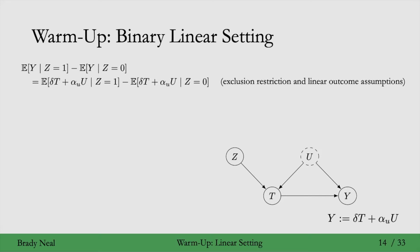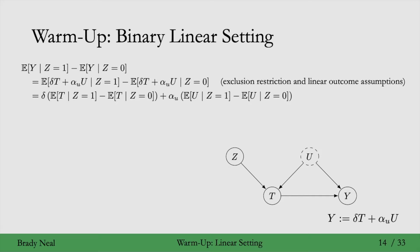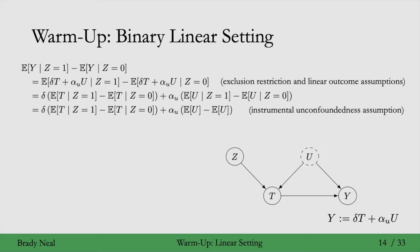So that's what we get here. To do this, we're using the linear outcome assumption, and in addition we're using the exclusion restriction assumption, since that tells us that z doesn't show up in this structural equation for y. Then we can just use linearity of expectation and regroup terms so that we have the delta terms grouped on the left and the alpha sub u terms grouped on the right. Then in these conditional expectations for u, we can get rid of z because u and z are independent due to the instrumental unconfoundedness assumption.